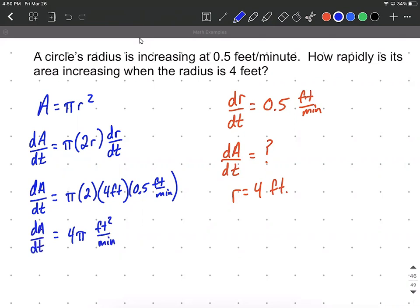And that answers our question. The area is changing at 4π feet squared per minute at the time when our radius is 4 feet.